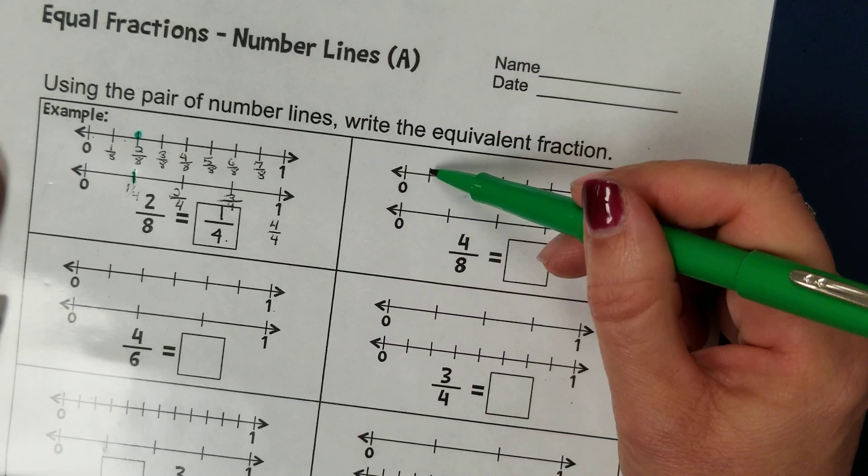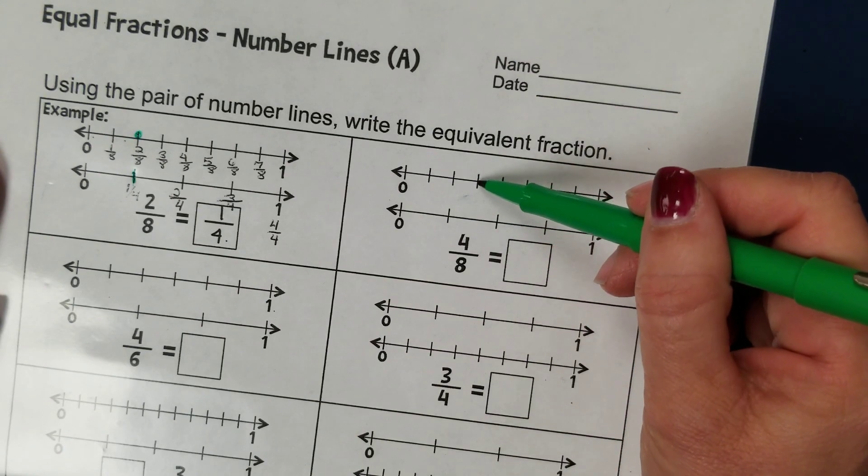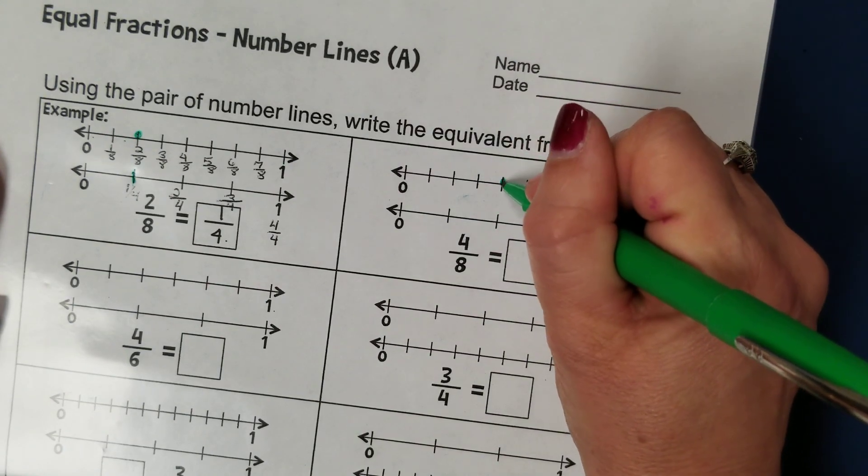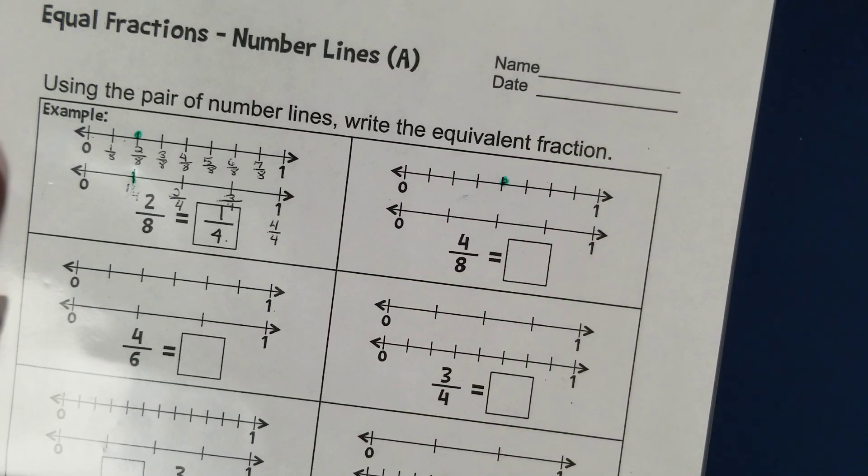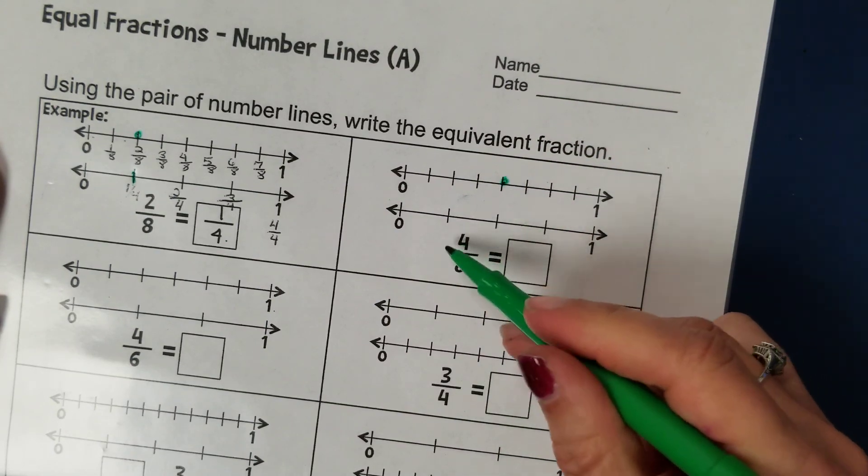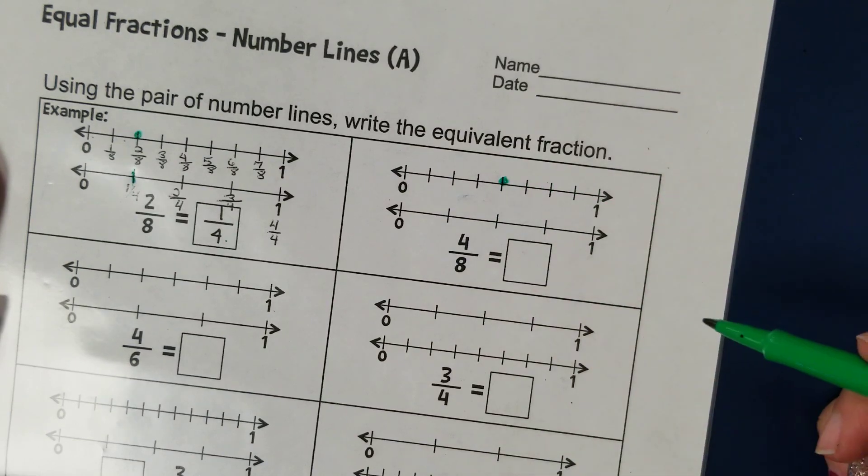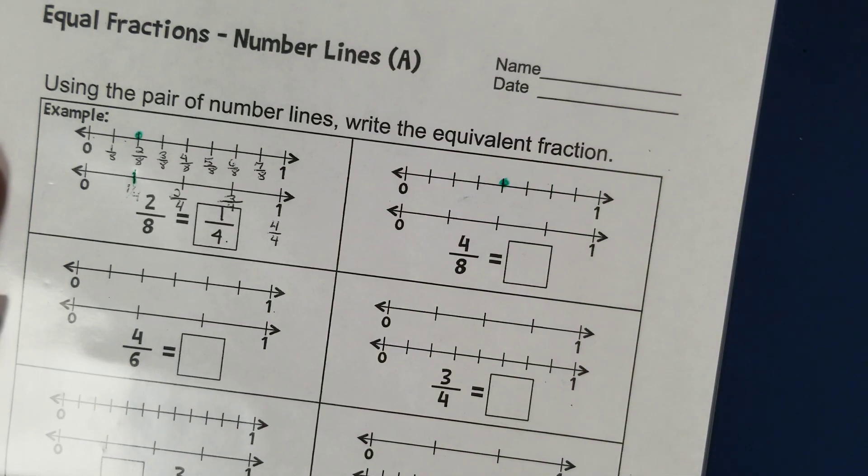And they want us to jump one-eighth, two-eighths, three-eighths, four-eighths. So you want to mark what that first number is, that first fraction rather is, so that you know what you're trying to find an equivalent fraction to.